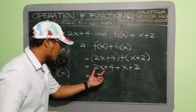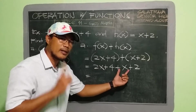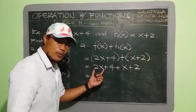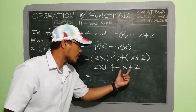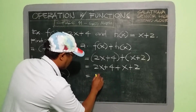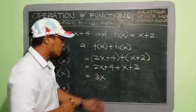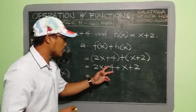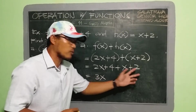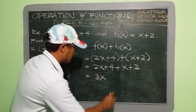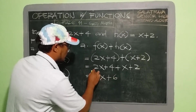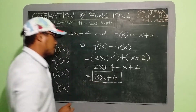We have 2x plus another x. So 2x + x = 3x. And we also have 4 + 2 = 6. So our final answer is 3x + 6.